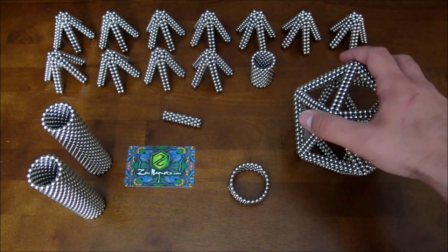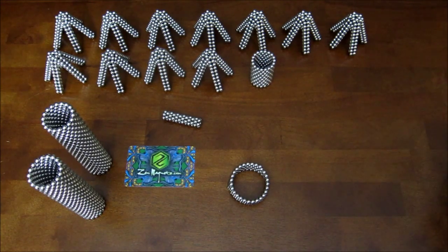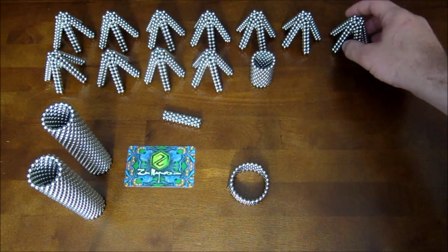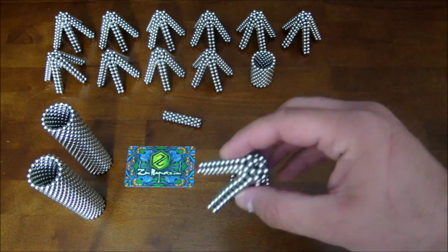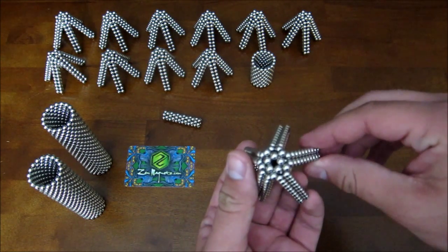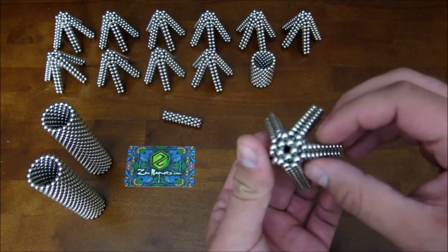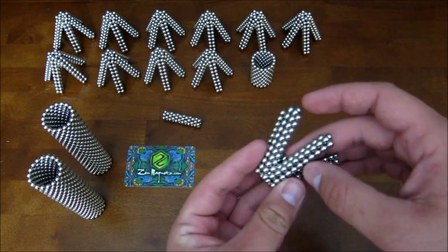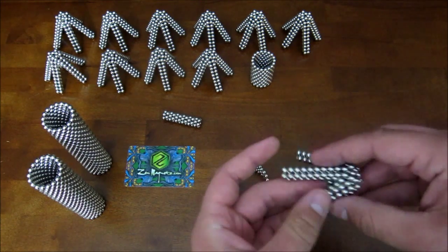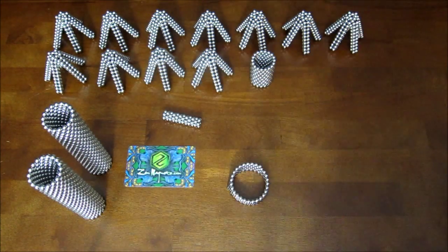So build this and set it aside. Then you're going to need 12 of these pieces here. And you'll notice they look very similar to the small, the points for the small stellated dodecahedron. They're a little bit different though. So I'll show you how I do them.